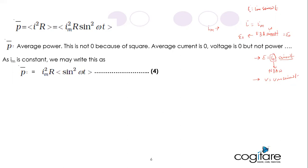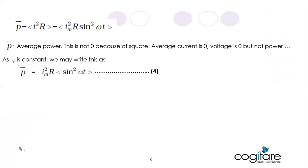Since Im and R do not change with time, they can be pulled out of the average. Only sin²(ωt) changes with time. So when finding the average power, we write p-bar equals Im²·R multiplied by the average value of sin²(ωt), and we need to find that average.